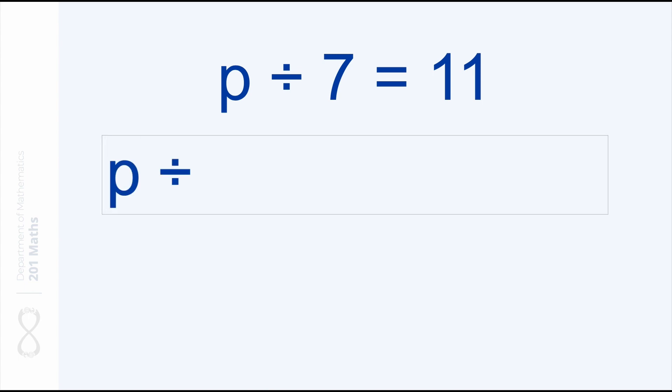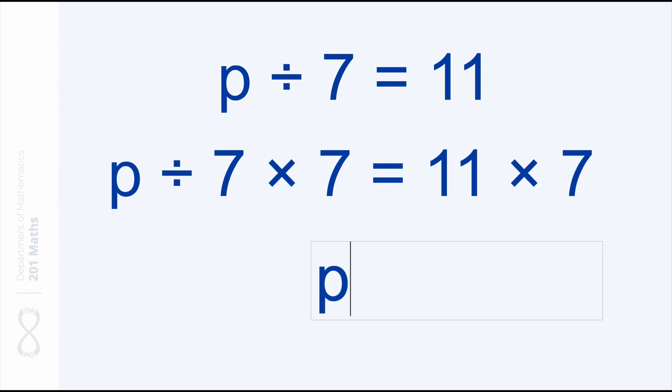So we have p divided by 7 and now we need to multiply this by 7 to neutralize this division. And on the other side of course we start with 11 that we also have to multiply by 7. Here we go. The manipulations we did on the left side have left p by itself, and on the right side we just need to multiply 11 by 7 which gives us 77. And here again we have solved for p. The value of p is 77.